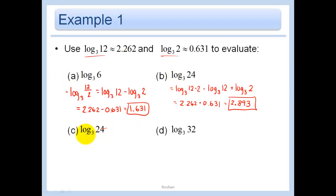part c oops i wrote the same problem twice so let's go to the next one log base 3 of 32 well the thing i can think of here is maybe that 2 to the fifth power is equal to 32 so that is just 5 times log base 3 of 2 in other words 5 times 0.631 or 3.155